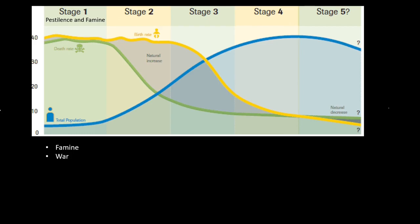No country is in stage one anymore. The countries correlate with their Demographic Transition Model stage — if a country is in stage four of the DTM, it's going to be in stage four of this model as well. Back to stage one: pandemics and epidemics are a big cause of death, along with infections — like an unclean cut getting bacteria in it. Parasites such as fleas and mosquitoes cause disease as well, and then animal attacks due to lack of technology. People may have been hunter-gatherers a long, long time ago.